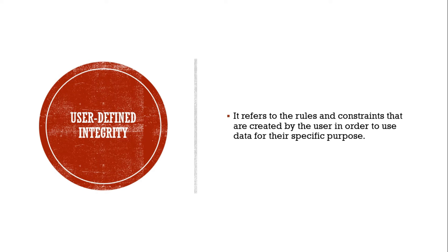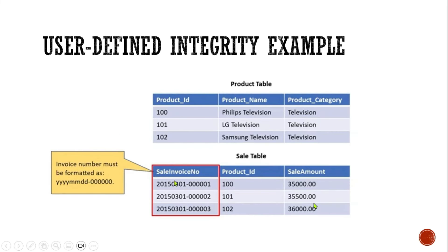The second type is user-defined integrity. It refers to the rules and constraints created by the user in order to use the data for a specific purpose. User-defined integrity allows users to specify their own custom requirements for the data stored in their database. This can include ensuring values are within a certain range or in a certain date or time format. For example, in the sale table the sale invoice number must be formatted as year, month, day followed by six digits. So the year is 2015, followed by the month March, followed by the day 01, with a zero-prefixed six-digit invoice number. As a user we are defining a custom rule to show the invoice number in a certain format — this is called user-defined integrity.